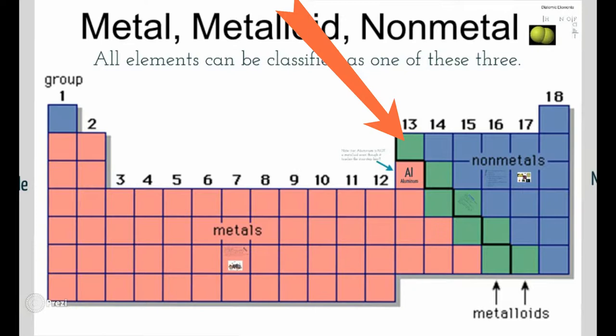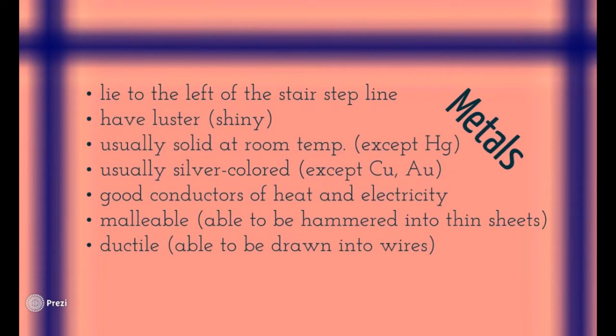A metalloid shares properties of both metals and non-metals. One of the most special ones we're going to talk about is silicon — not silicone. People think silicone is an element, but it's not. Silicone is a polymer. Silicon is what you put in your microchips and things like that, and we're going to talk about why it's so special.